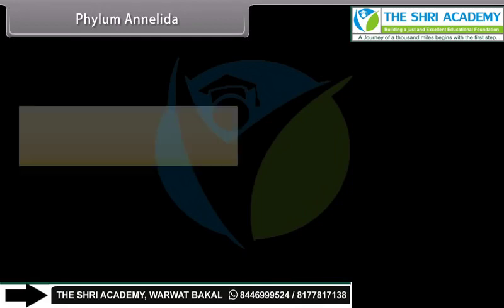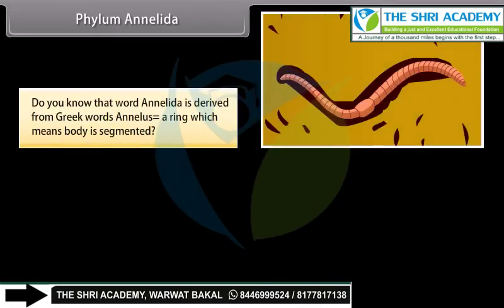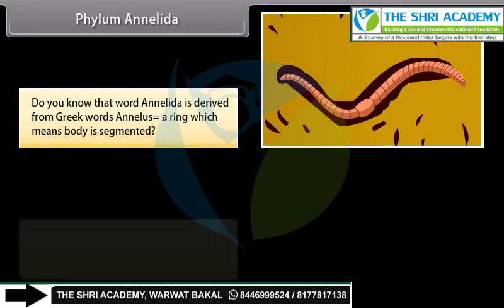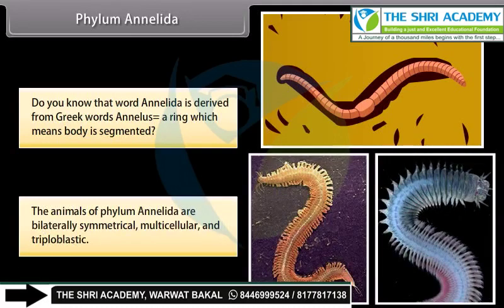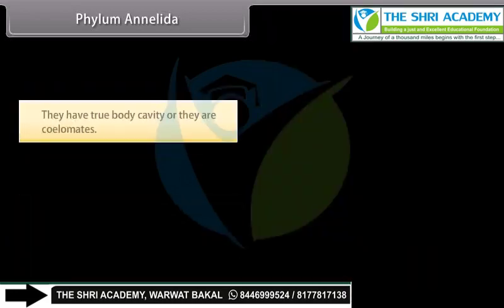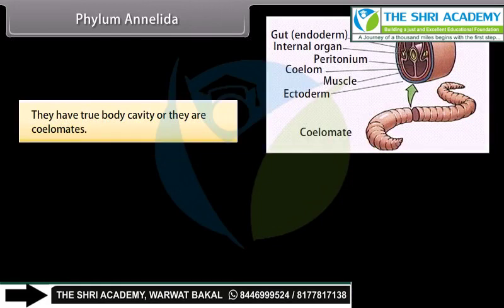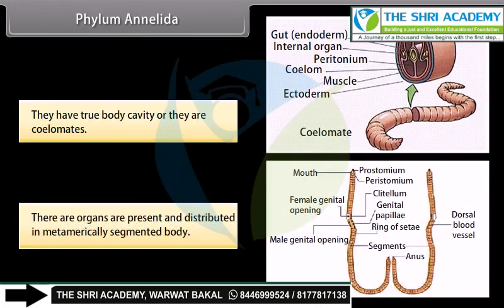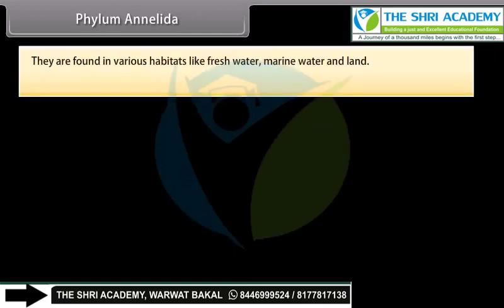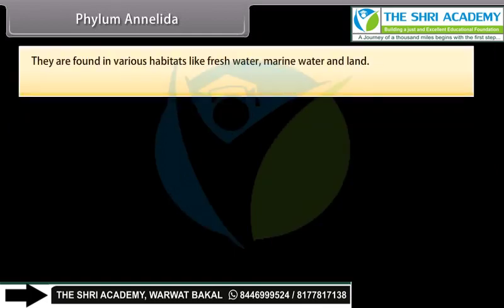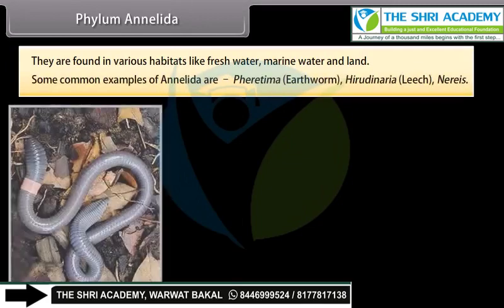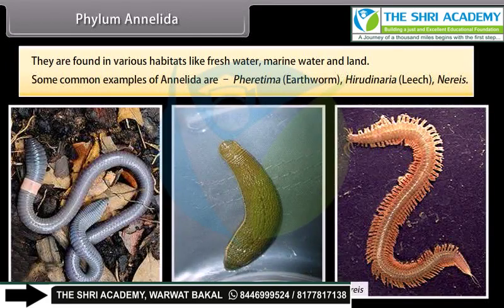Phylum Annelida. The word Annelida is derived from Greek word annelus, meaning ring, which means the body is segmented. The animals of Phylum Annelida are bilaterally symmetrical, multicellular, and triploblastic. They have a true body cavity, so they are coelomates. There are organs present, distributed in a metamerically segmented body. They are found in various habitats like freshwater, marine water, and land. Common examples are Pheretima (earthworm), Hirudinaria (leech), and Nereis.